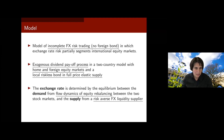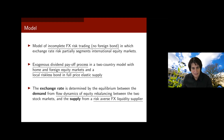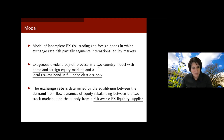We have two equity markets — one domestic, one foreign — modeled as exogenous dividend payoff processes. In each country there is a riskless bond in perfectly elastic supply, which is why this is not general equilibrium. The exchange rate is determined by equilibrium between the demand for currency coming from international equity investments — buying foreign assets and repatriating dividends — and the supply of currency from risk-averse foreign exchange liquidity suppliers.